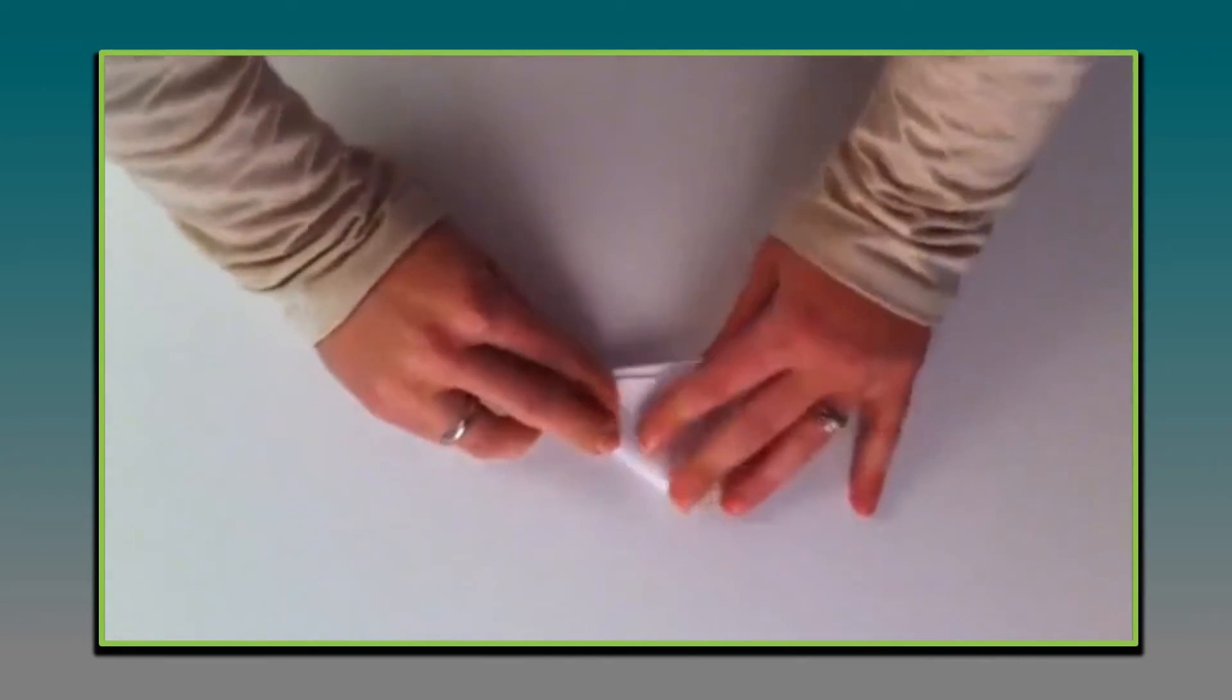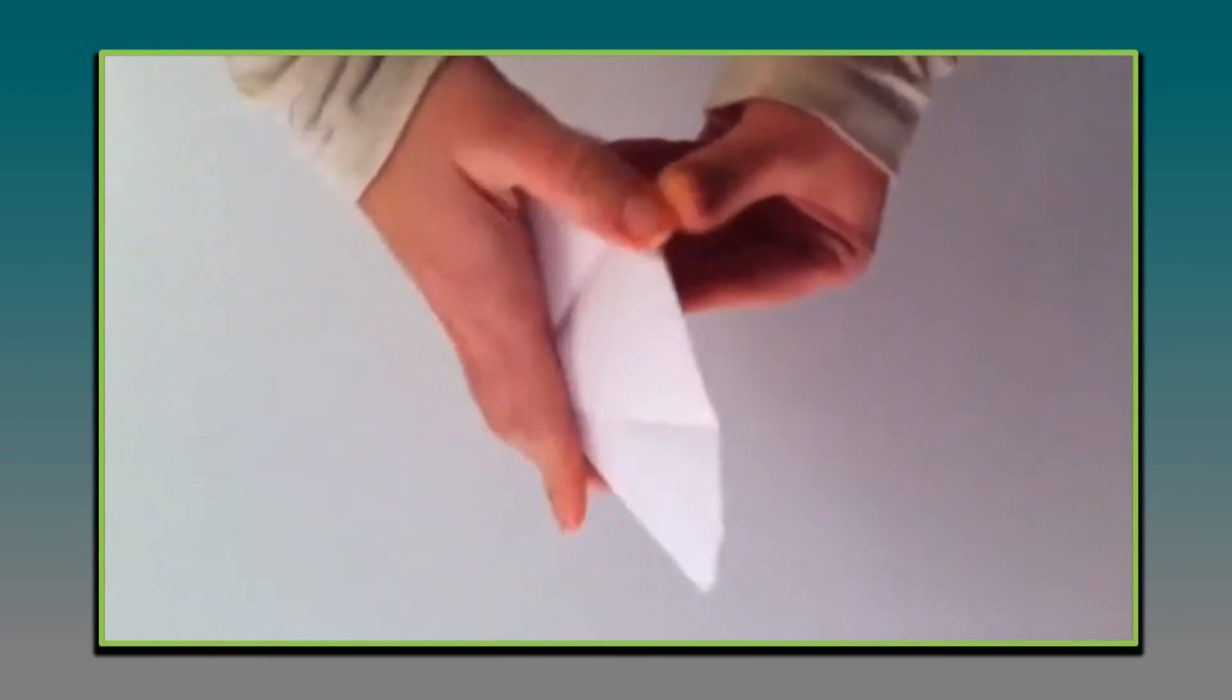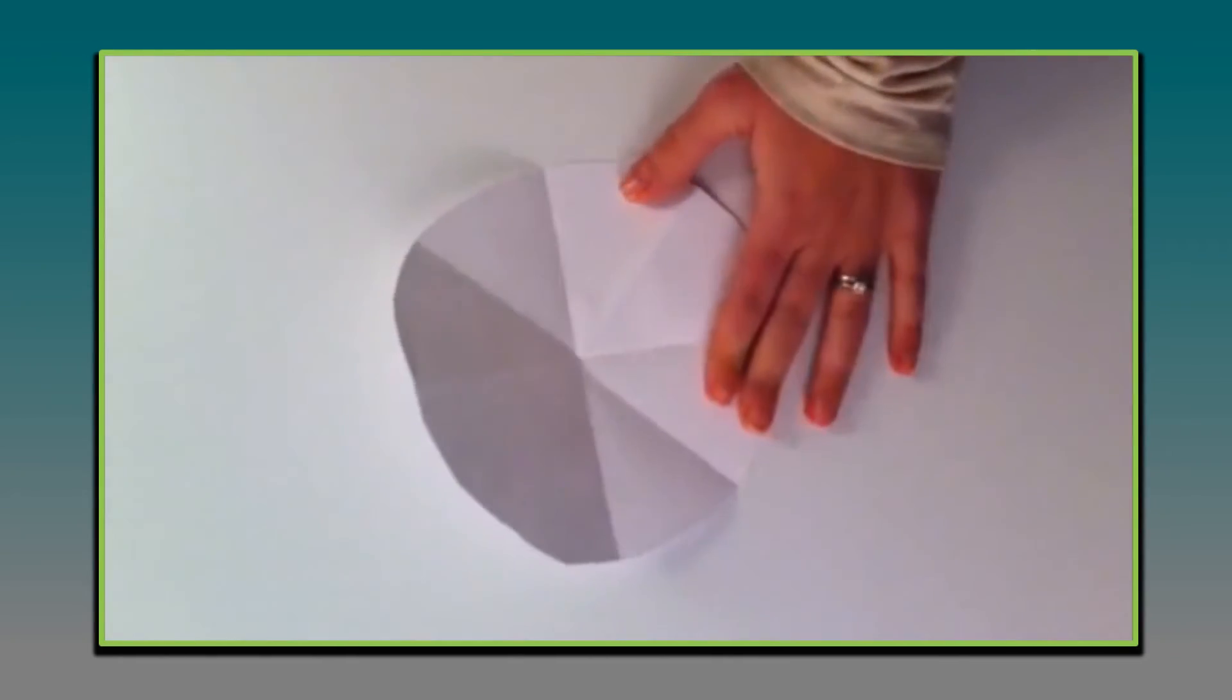Then I folded it to make eight sectors and I traced a circle in the middle. Then I marked off halfway between the edge and that circle all the way around just by eyeballing it.